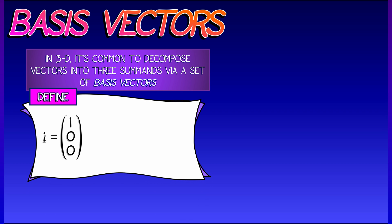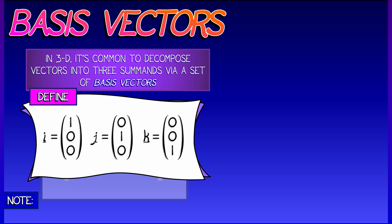In 3D the basis vectors that are most common are called the standard basis vectors, otherwise known as i, j, and k, where i is the vector 1, 0, 0, j is 0, 1, 0, k is 0, 0, 1 unit vectors along the x, y, and z axes.